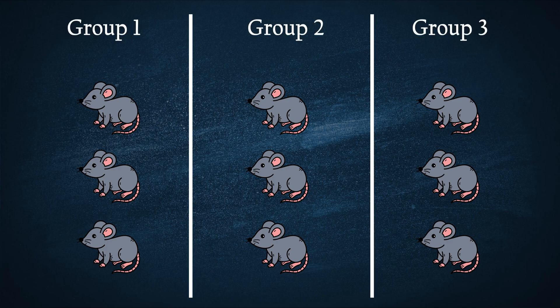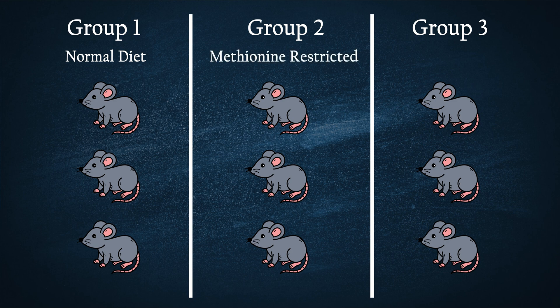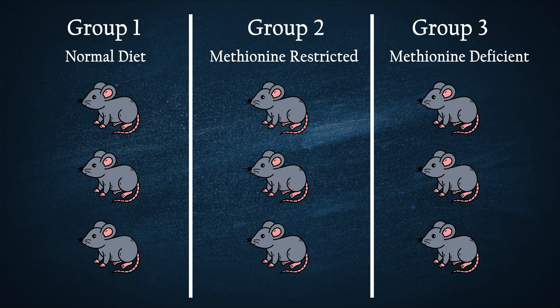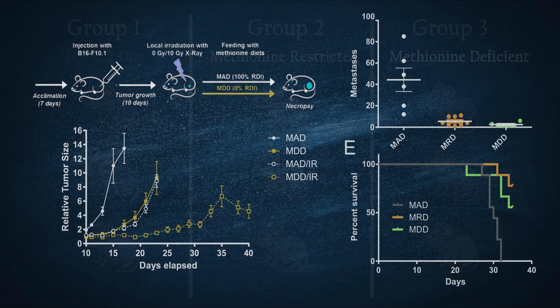The first group continued to consume a normal diet. The second group had its methionine intake restricted, while the third group was provided a diet that was completely devoid or deficient in methionine.